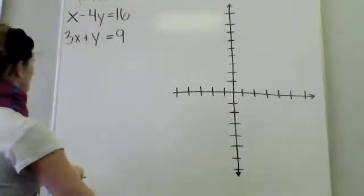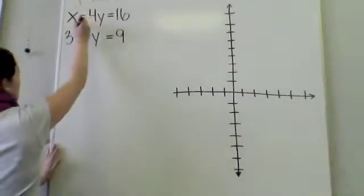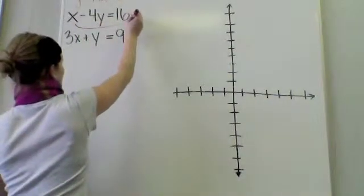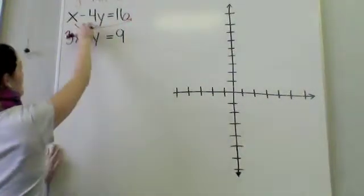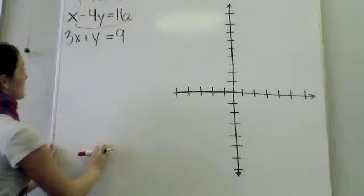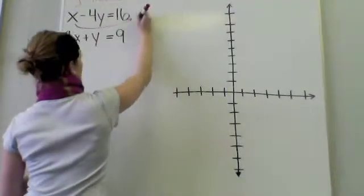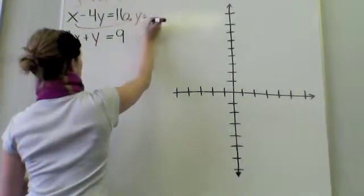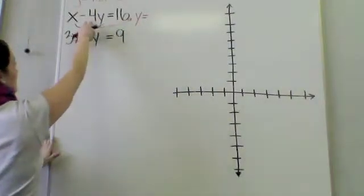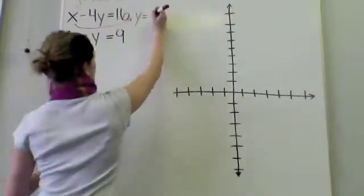So my very first one, I need to bring the x on the other side by subtraction. And then I'm going to need to divide everything by negative 4. So this will give me my new equation, where y is equal to 16 divided by negative 4 is going to be negative 4.